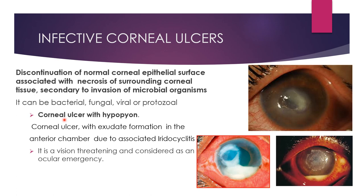Whenever we deal with infective corneal ulcer, we often come across the term hypopion. Hypopion is defined as pus in the anterior chamber. When the word pus comes, we usually think of something that is infected. But in case of hypopion, this is usually not true. Although the cornea is infective, the hypopion is usually inflammatory or sterile in nature. It occurs because of associated inflammation of surrounding ocular tissues — the iris and ciliary body — so it is due to associated iridocyclitis, which causes increased permeability of iris vessels.